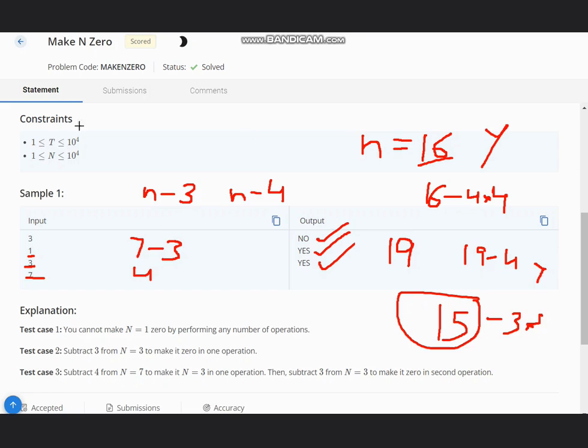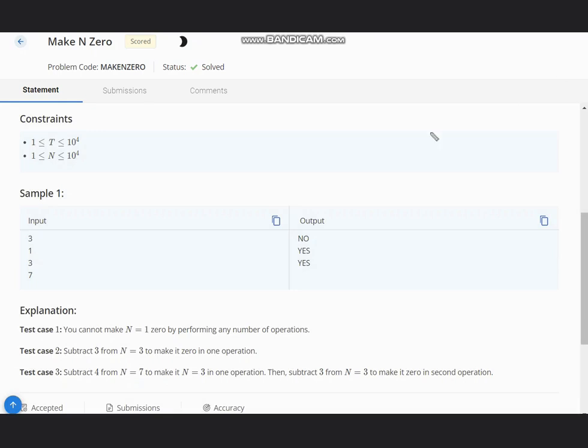So YES, the logic is very simple. Just take N, and if N modulus 3 or N modulus 4 is 0, which means N is completely divisible by any of the two numbers, then we simply output YES. This is the first case. If this is not there, we move to the second case.